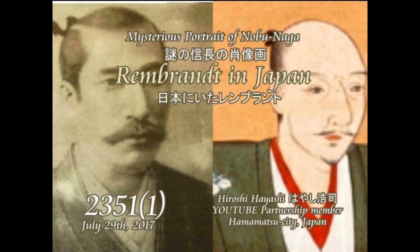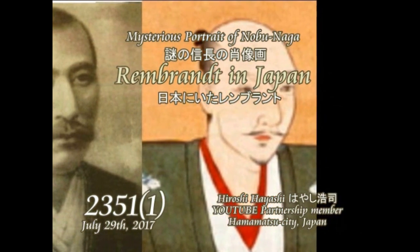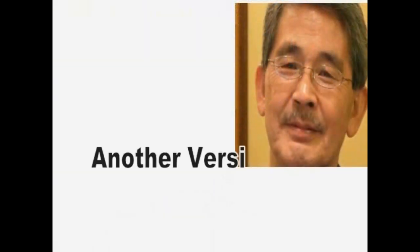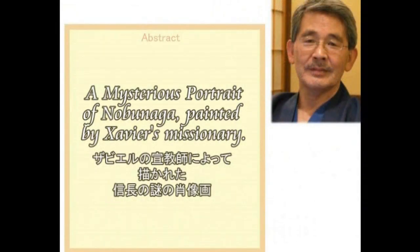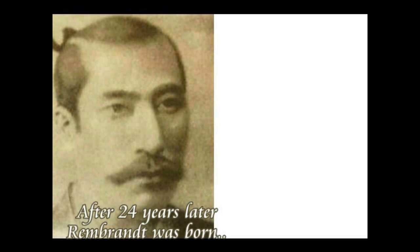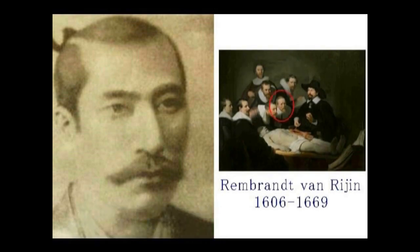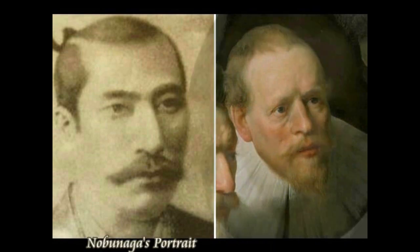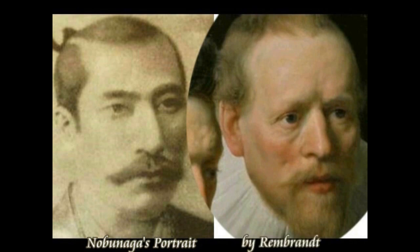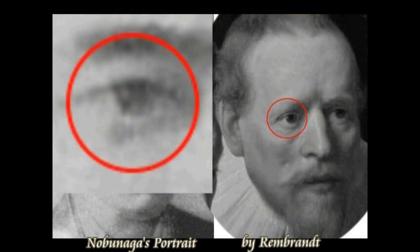Francis Xavier reached Japan on July 27, 1549, with Angelo and three other Jesuits, when he went ashore at Kagoshima, the principal port of Satsuma province on the island of Kyushu. As a representative of the Portuguese king, he was received in a friendly manner by Shimazu Takahisa, Daimyo of Satsuma, but in the following year he forbade the conversion of his subjects to Christianity under penalty of death.